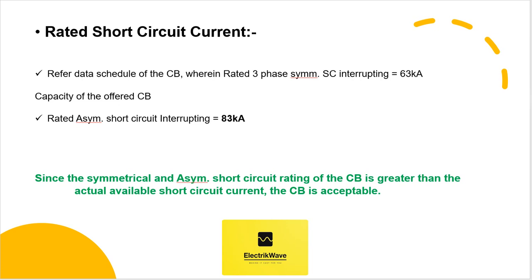Checking as per the data schedule of the circuit breaker, the rated three-phase symmetrical short circuit interrupting capacity of the offered 400 kV circuit breaker is equal to 63 kA, and the rated asymmetrical short circuit interrupting capacity is equal to 83 kA. Since the symmetrical and asymmetrical short circuit rating of the circuit breaker is greater than the actual available short circuit current, the circuit breaker is acceptable.